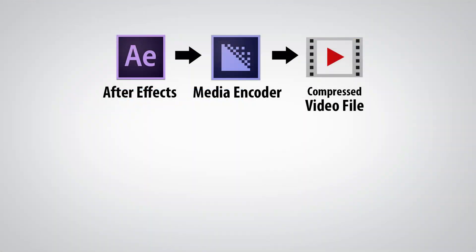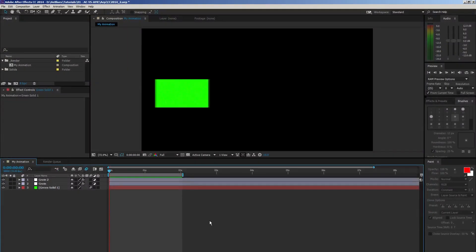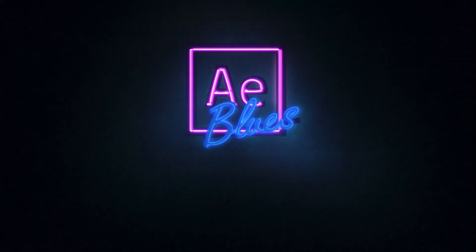To summarize: if you are going to encode your composition in a one-step render from After Effects to Adobe Media Encoder, watch out for the differences in the way both of these handle your composition. Thanks for watching, hope this helps some of you. If you have any comments or suggestions, please be sure to leave them below. My name is Roy from AE Blues. Till next time, take care.